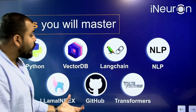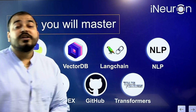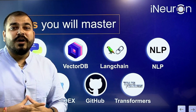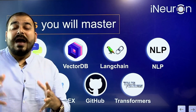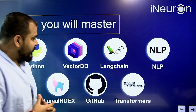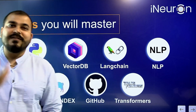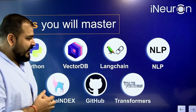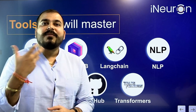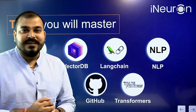We'll cover GitHub — how to commit code, merge code, and collaborate in a repository. Then finally, transformers — and yes, the word 'transformer' may remind you of the movies, but in the context of NLP it means something very different.